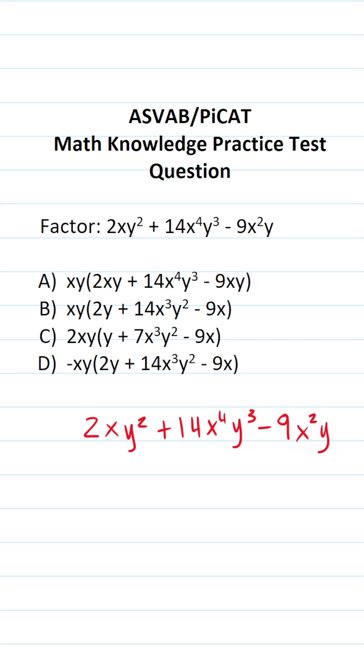So in order to factor this, we're going to look for something that all these terms have in common. Do they have a 2 in common? 2 goes into 2, 2 goes into 14, 2 does not go into 9. So we can't factor out a 2. So right away, we know that this one is wrong.